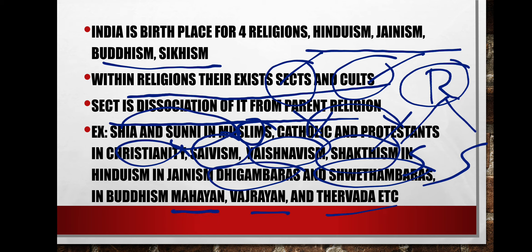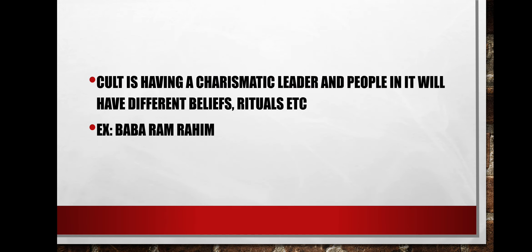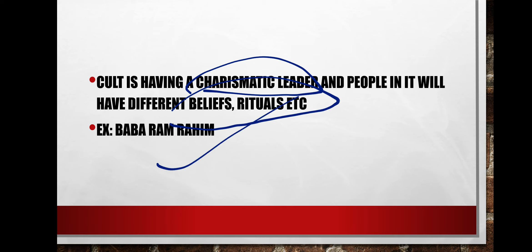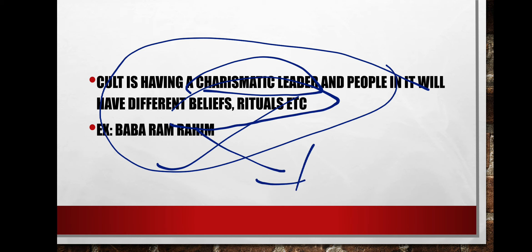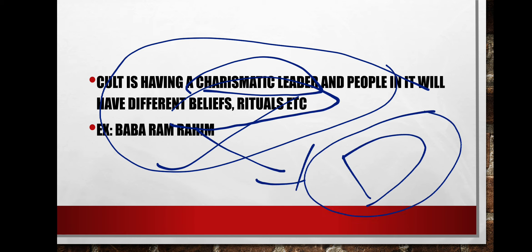A cult, on the other hand, has a charismatic leader with distinct beliefs and rituals — for example, Baba Ram Rahim, whose devotees follow different beliefs, rituals, and practices. So religion encompasses both sects, which have a parent origin within the religion itself, and cults, which form around a different charismatic leader with distinct beliefs and practices.